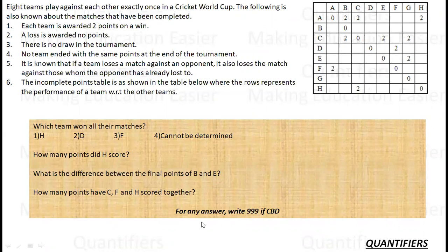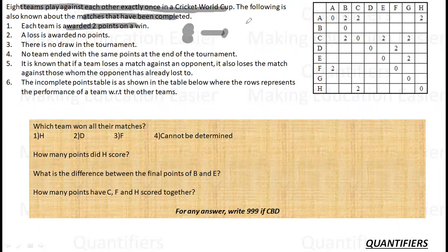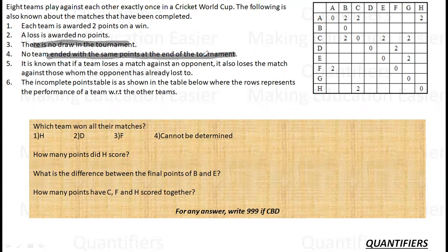The set says, 8 teams play against each other exactly once in the Cricket World Cup. The following is also known about the matches that have been completed. Each team is awarded 2 points on a win. So, 8 teams. Each team is going to play 7 matches. So, the maximum points is 40. There is no draw in the tournament. No team ended with the same point at the end of the tournament. Fine.